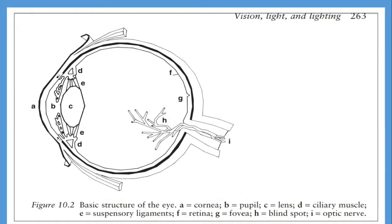The cornea plays a major role in refracting the light. Further refraction occurs as the light passes through the lens, indicated as letter C in the figure. The pupil, indicated as letter B in the figure, works like the aperture of a camera to vary the amount of light entering our eyes. In bright light, the iris contracts, the pupillary diameter decreases, and only the central part of the lens forms an image on the retina.